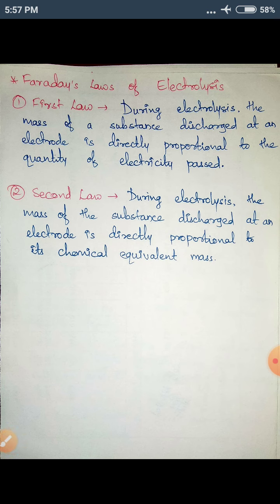Now we will see Faraday's laws of electrolysis. There are two laws. The first law states that during electrolysis, the mass of a substance discharged at an electrode is directly proportional to the quantity of electricity passed. The more current is passed, the more substance is deposited on the electrode; if the current is less, the substance deposited will also be less.